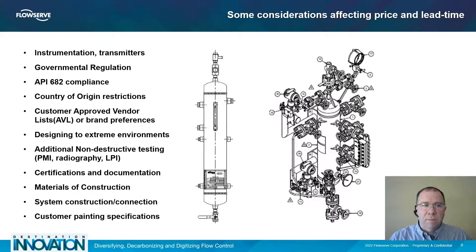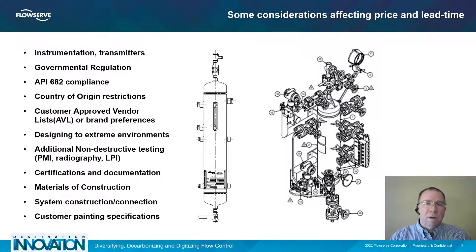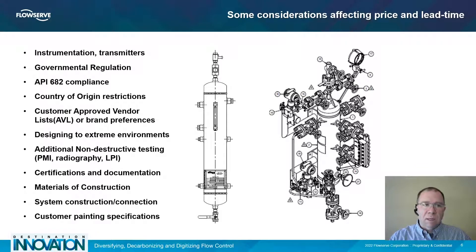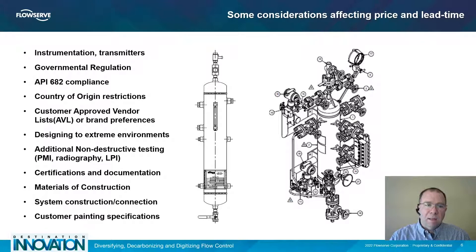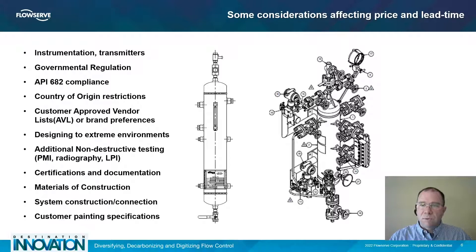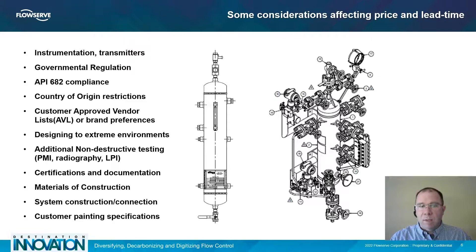As you start to specify your piping plan, it's very important to consider factors that can affect price and delivery. One of the most important is instrumentation. A general industry piping plan may have just a simple pressure gauge and level gauge that are inexpensive and readily available. But as your piping plan gets more complex and you move from switches to transmitters, the specific requirements of those transmitters may significantly affect the price and lead time.